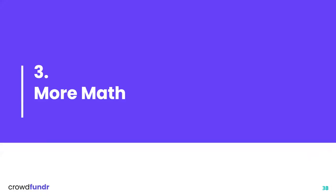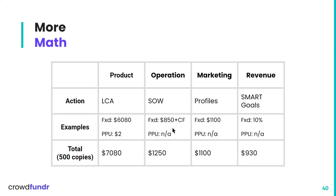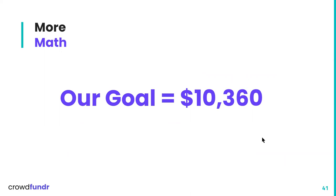Now we need to determine our final goal with the crowdfunding fees included. Since we chose Simply Free and only need to worry about payment processing fees, our crowdfunding fees are going to be all of our costs so far times 4%, which equals $398.40 — we'll round it to $400. So completing our table: product $7,000, operation $1,200, marketing $1,100, and revenue about $900, giving us a goal of $10,360.